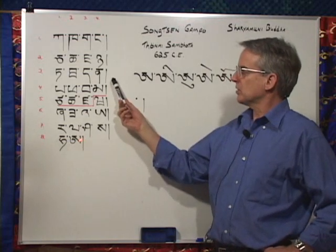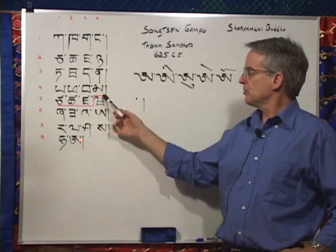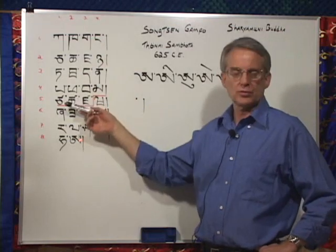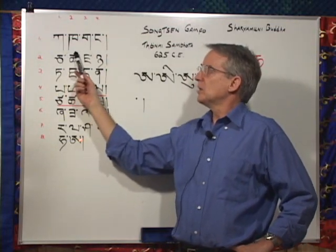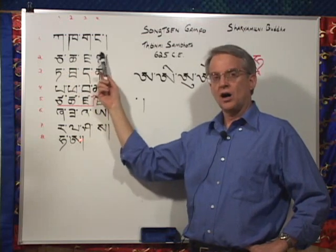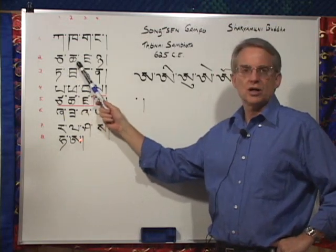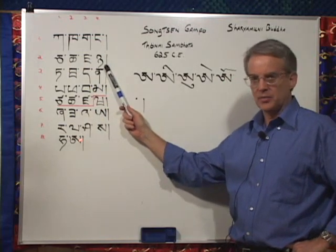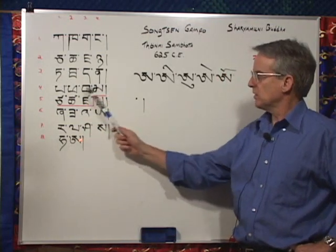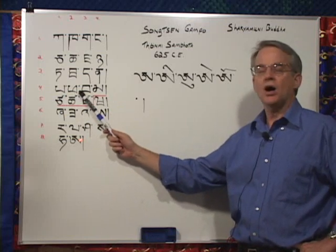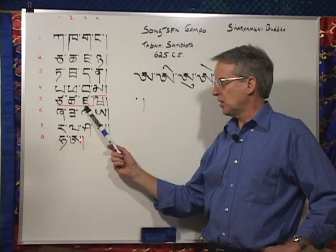Now if you're following along in the book, Introduction to Tibetan Level 1, it would be good to look at page three at this point. I'll recite once through the first twenty letters, the letters in the first five rows: ka, ka, ga, na. Then the second row, sounds made at the roof of the mouth: cha, cha, ja, nya. In the third row: ta, ta, da, na. In the fourth row: pa, pa, ba, ma. And then in the fifth row: ca, ca, za, wa.